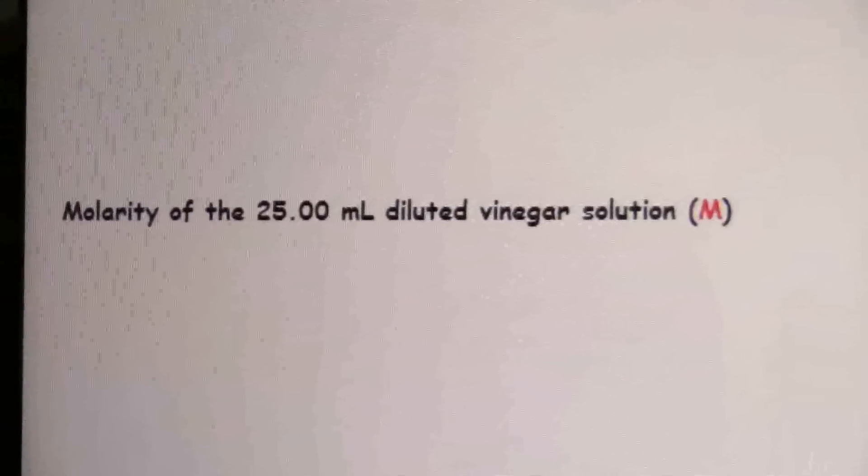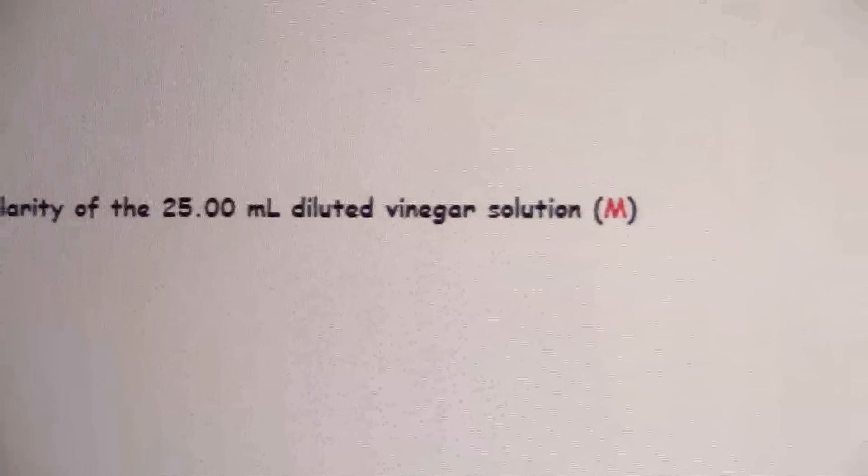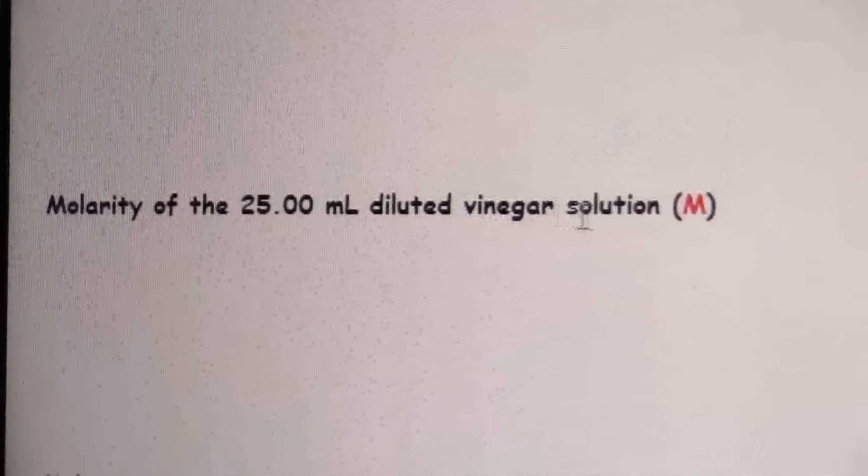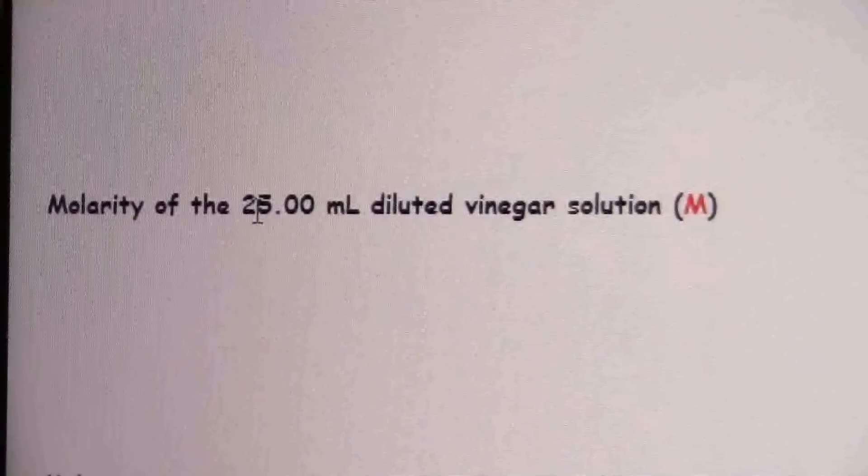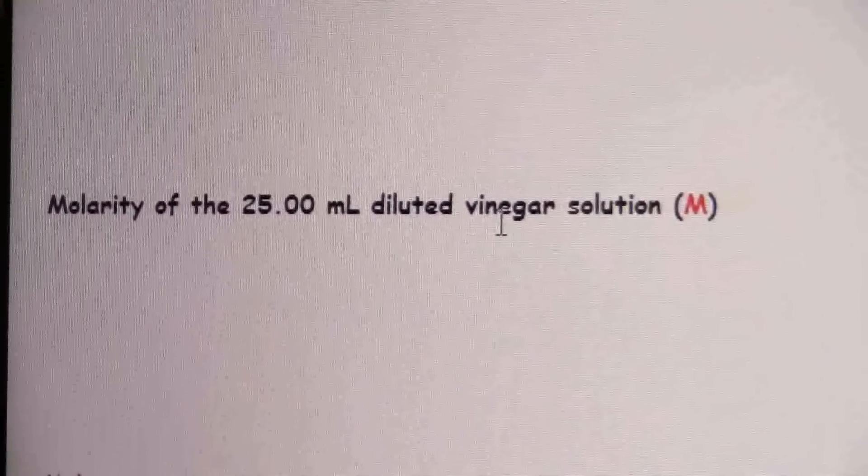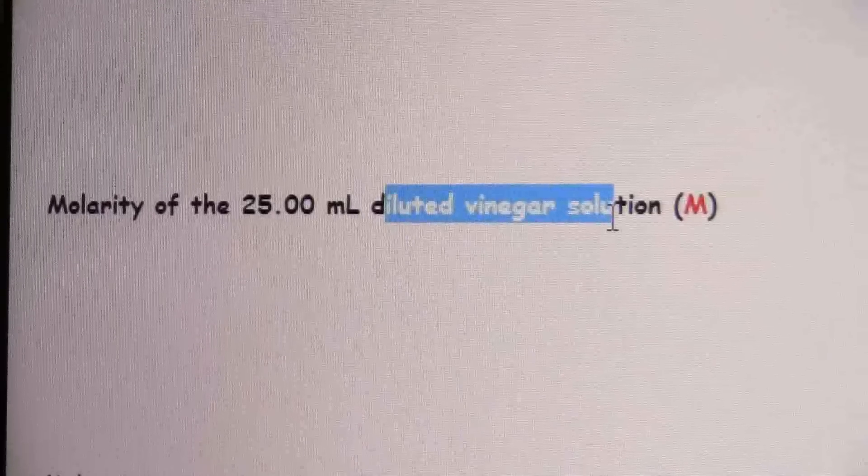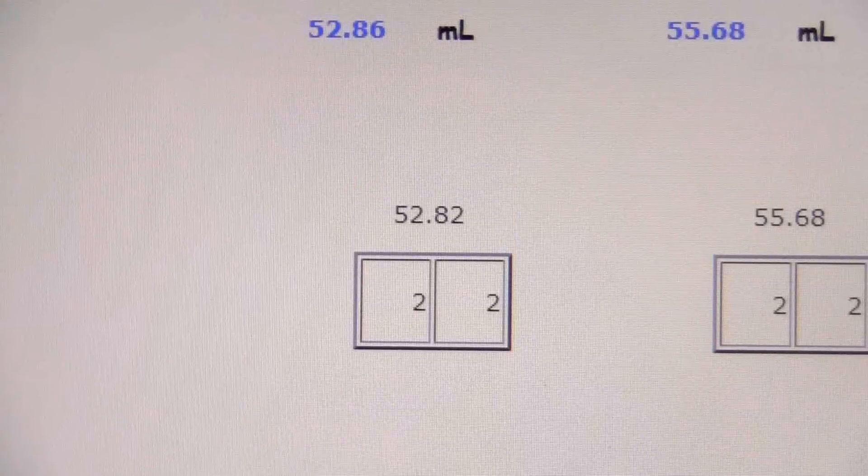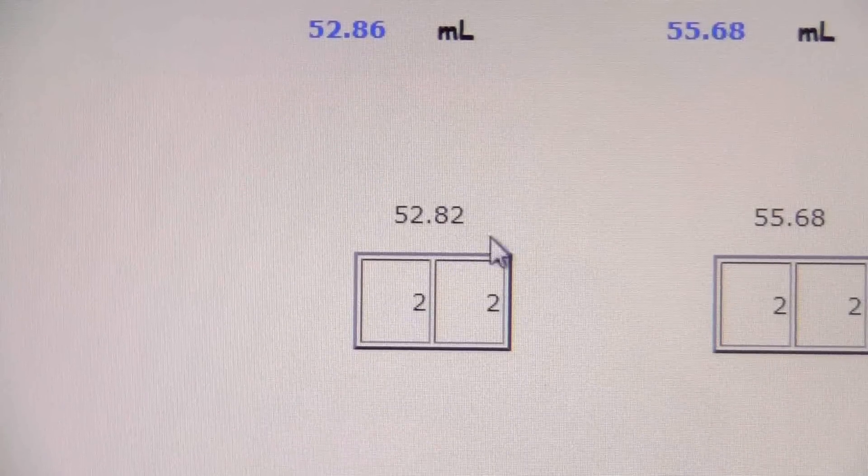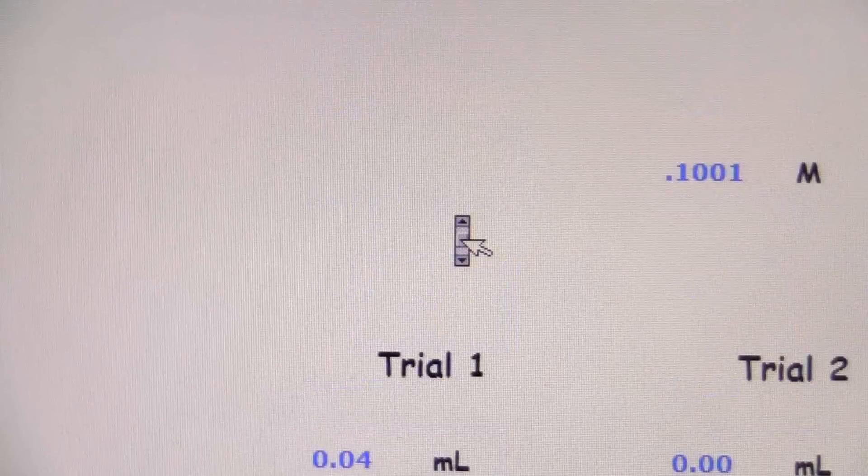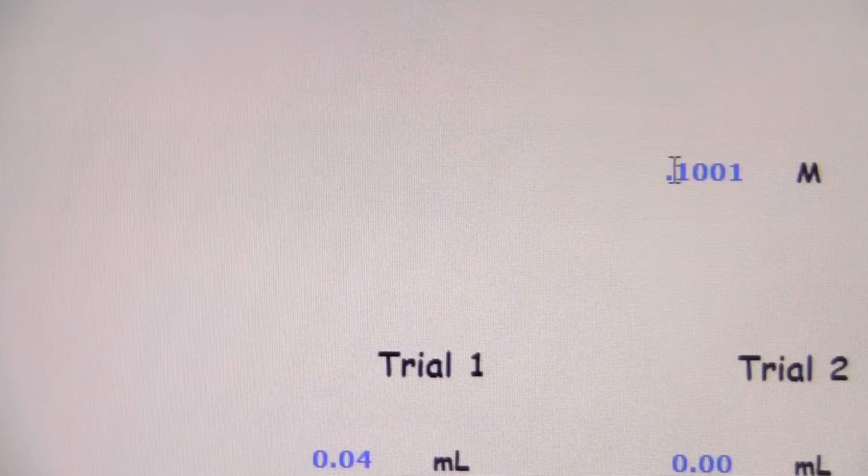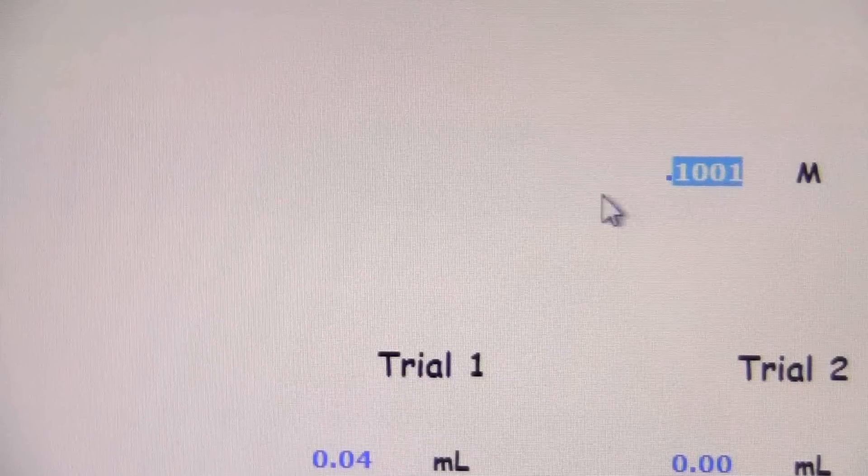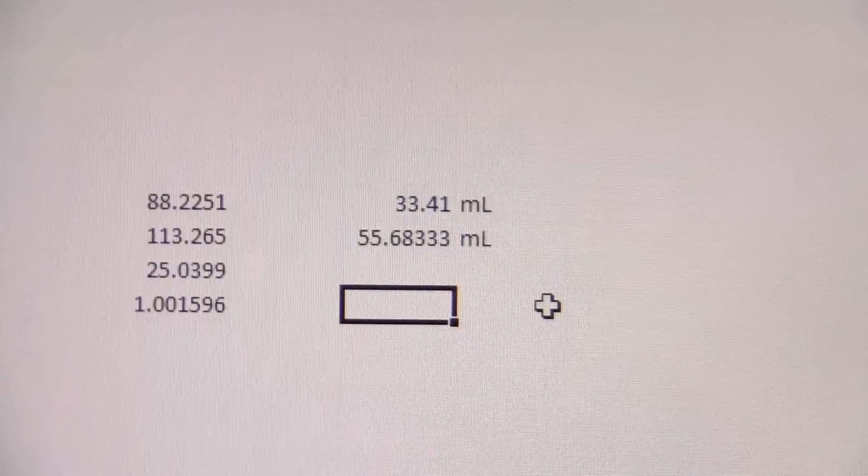So you see that's my 55.68. That's what I would put in for this value because it's expecting it for 25 milliliters, not 15. So that'll keep it happy. Just do that one little change. Multiply by 25, divide by 15. Now, we want to find the molarity of the 25 milliliters of the diluted vinegar solution. So we want the molarity of the diluted vinegar solution.